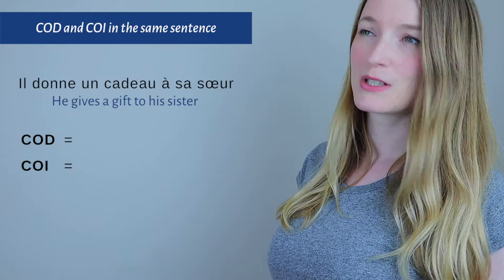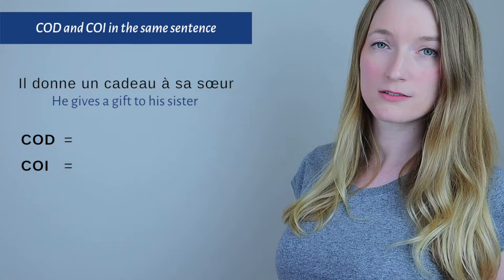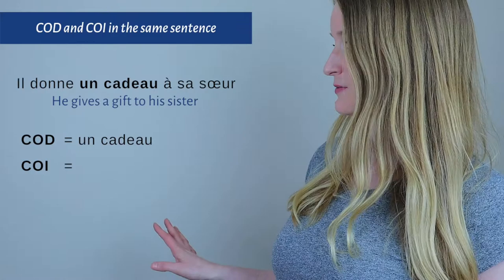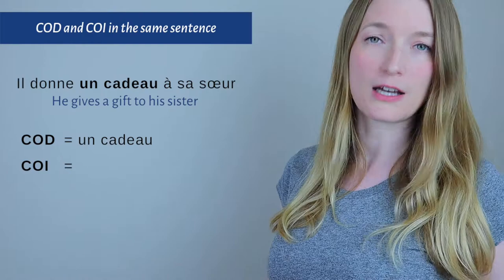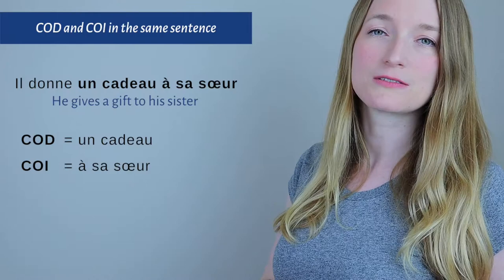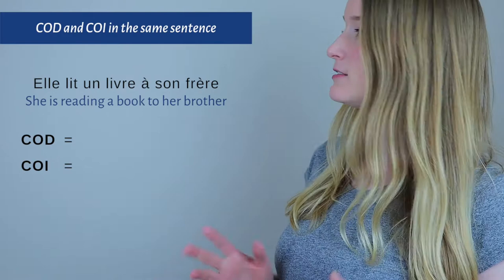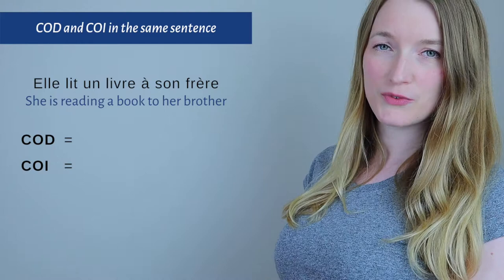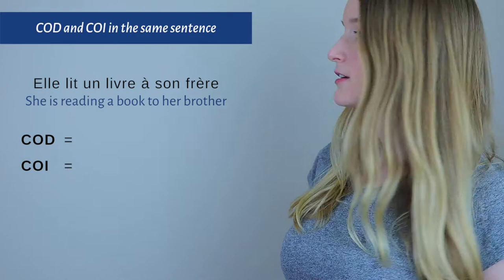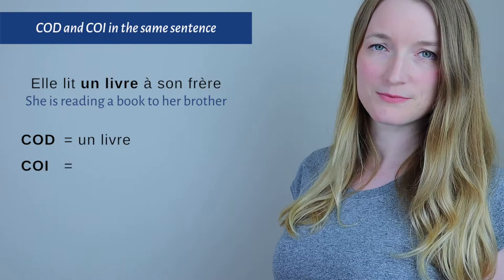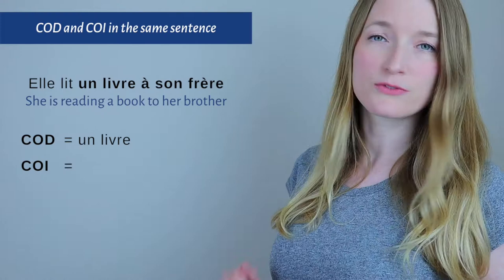So if we look for the COD: il donne quoi? Il donne un cadeau. Un cadeau is the COD. Now the COI: il donne un cadeau à qui? À sa sœur. À sa sœur is the COI. Let's see another one: Elle lit un livre à son frère. Elle lit quoi? What is she reading? Un livre. Un livre is the COD. Elle lit un livre à qui? À son frère. À son frère is the COI.